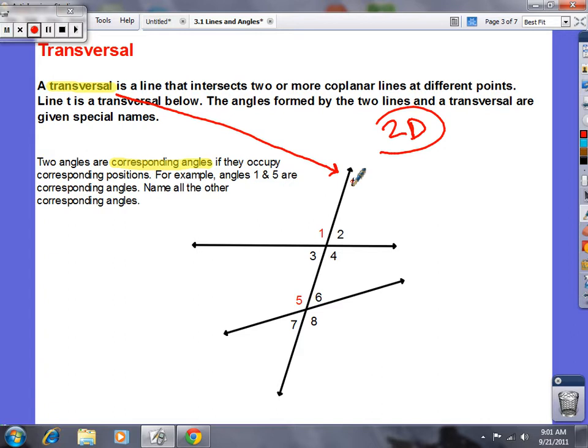You need to know what corresponding angles are, Fernando. Angles are corresponding if they occupy corresponding positions. For example, one and five, they're called corresponding angles. Fernando, give me another pair of corresponding angles. Two and six. So angle two and angle six, write them down. That's good. What else is corresponding? Angle three and angle seven, good. And angle four and angle eight.